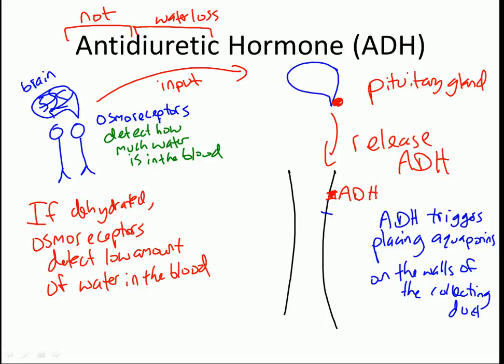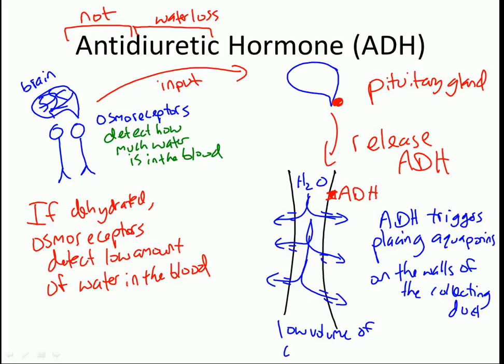When ADH is present, all these aquaporins appear on the walls. As water rushes through, it moves out to the low water potential in the medulla, leaving behind a low volume of concentrated urine. In this dehydrated situation, that's very good — the osmoreceptors detected low water, the pituitary released ADH, aquaporins were created, and we release only a small volume of urine, conserving water and preventing further dehydration.